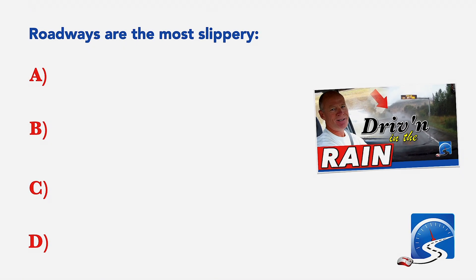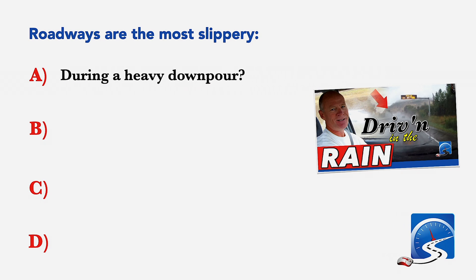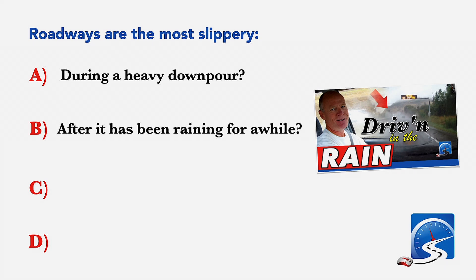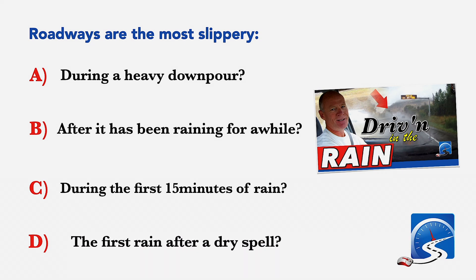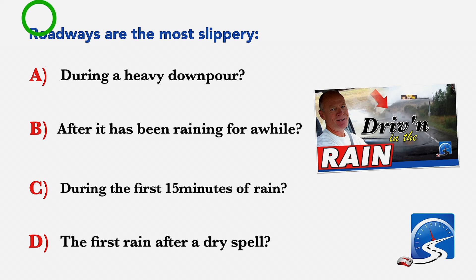Roadways are most slippery: A: During a heavy downpour. B: After it has been raining for a while. C: During the first 15 minutes of rain. D: During the first rain after a dry spell. Correct answer C: During the first 15 minutes of rain.